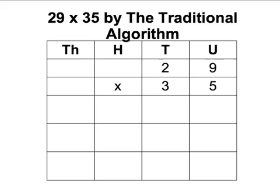This is going to be an example of the traditional algorithm for doing long multiplication. The sum we're going to do is 29 times 35, and I've laid that out in a grid with thousands, hundreds, tens, and units.